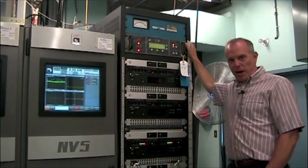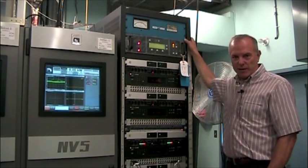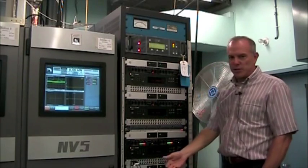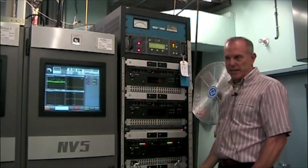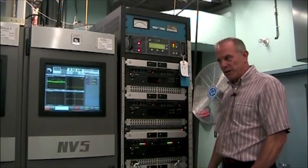This monitors the RF power from each of the transmitters and if one fails it selects the N plus 1's RF output into the antenna system and routes the failed transmitter into a dummy load.